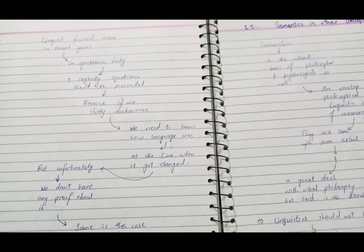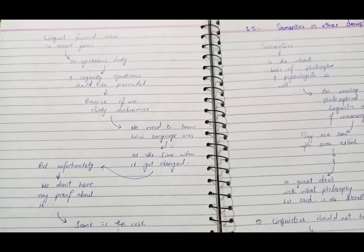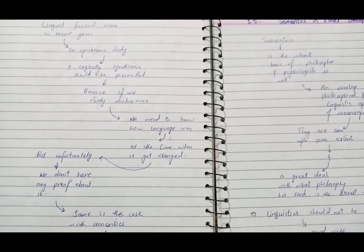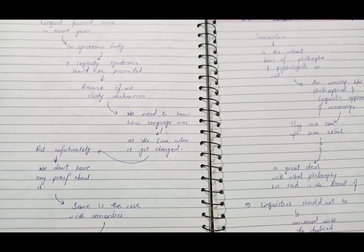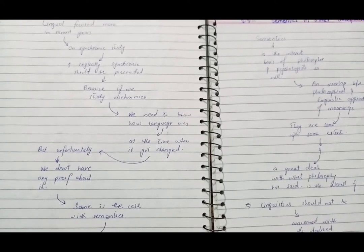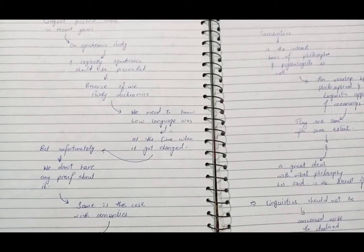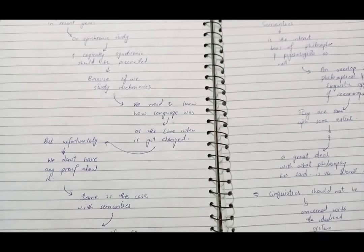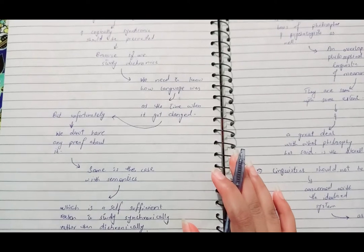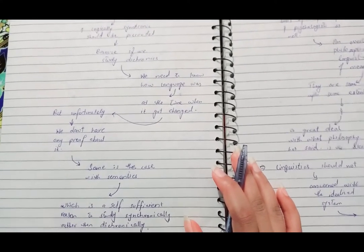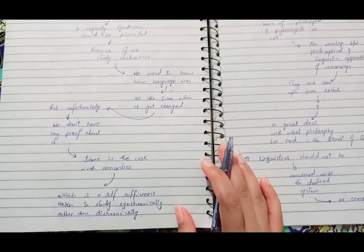Linguistics sometimes focus more on synchronic studies rather than the diachronic ones because the synchronic studies are easy to handle. If we study diachronic, we need to know the language origin, how the language appeared, when it was formed and changed. When there is no certain proof, we cannot say that a diachronic study is an effective decision. Same is the case with semantics, which itself is the self-sufficient reason for synchronically studying rather than diachronically. In synchronic study we do not need to have the proofs of the history, while in diachronic study we need the proofs.